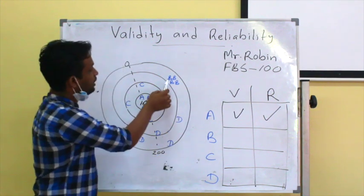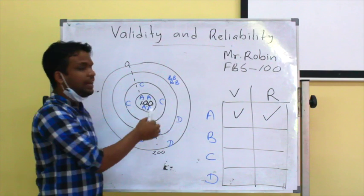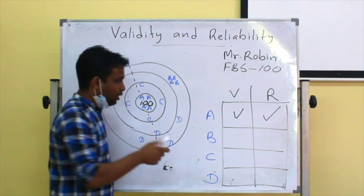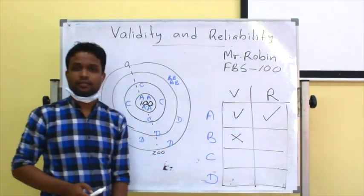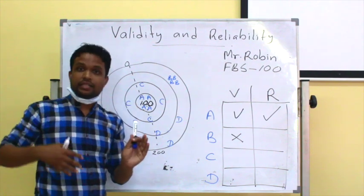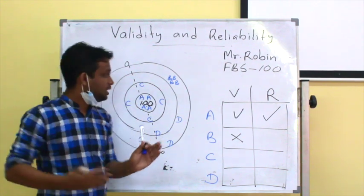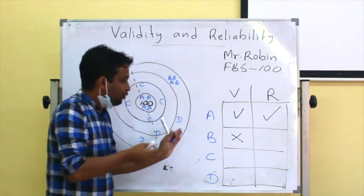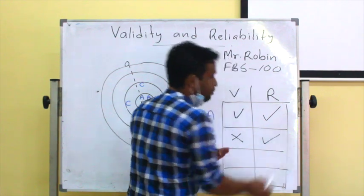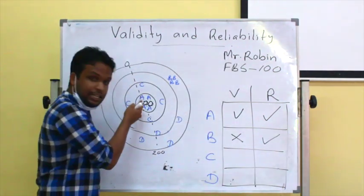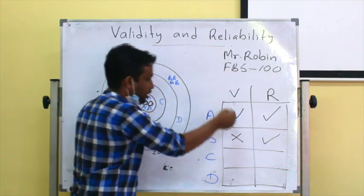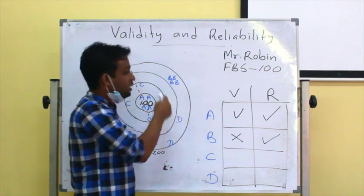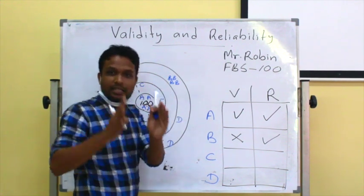Now look at test B. Test B has not produced exactly similar values to Mr. Robin's blood sugar, so it is not a valid test. However, test B has repeatedly produced almost the same result — it has repeatability — so we call it a reliable test.